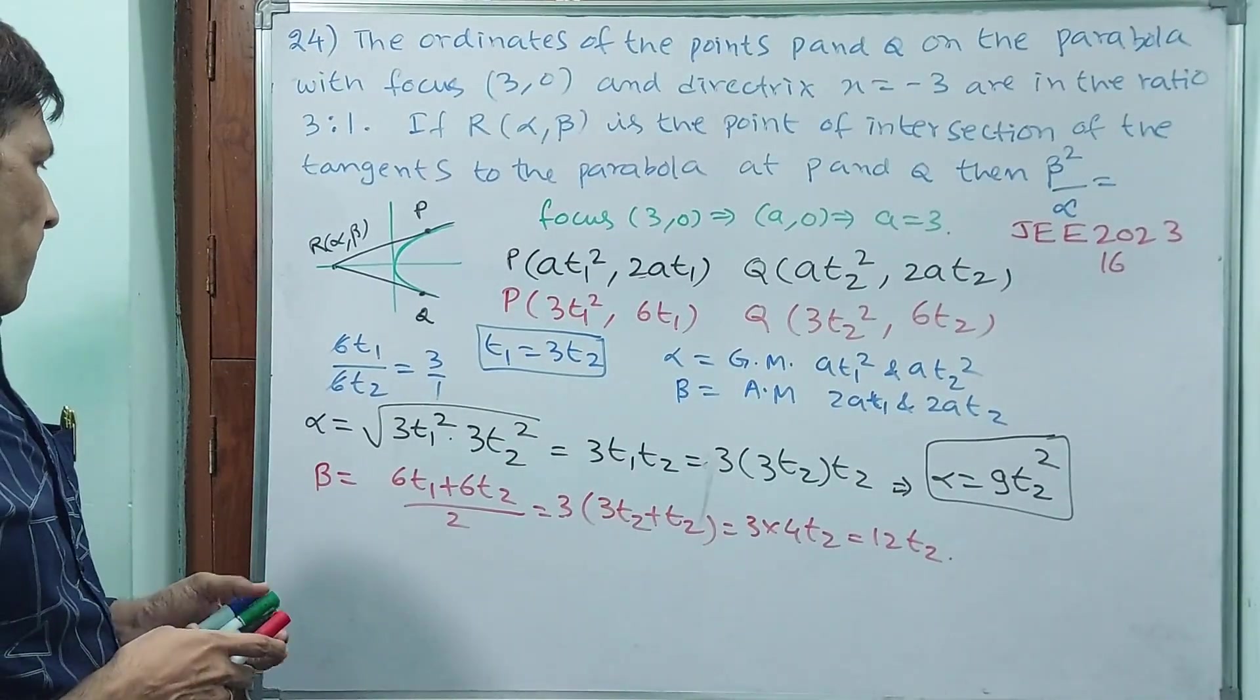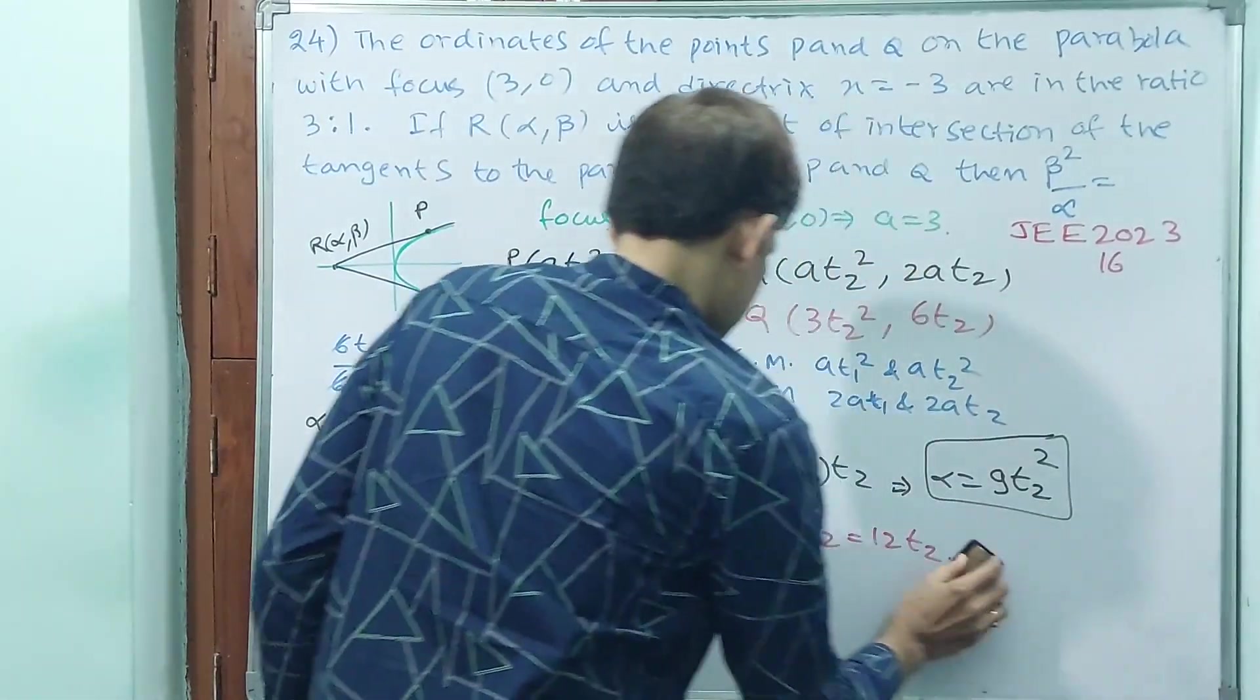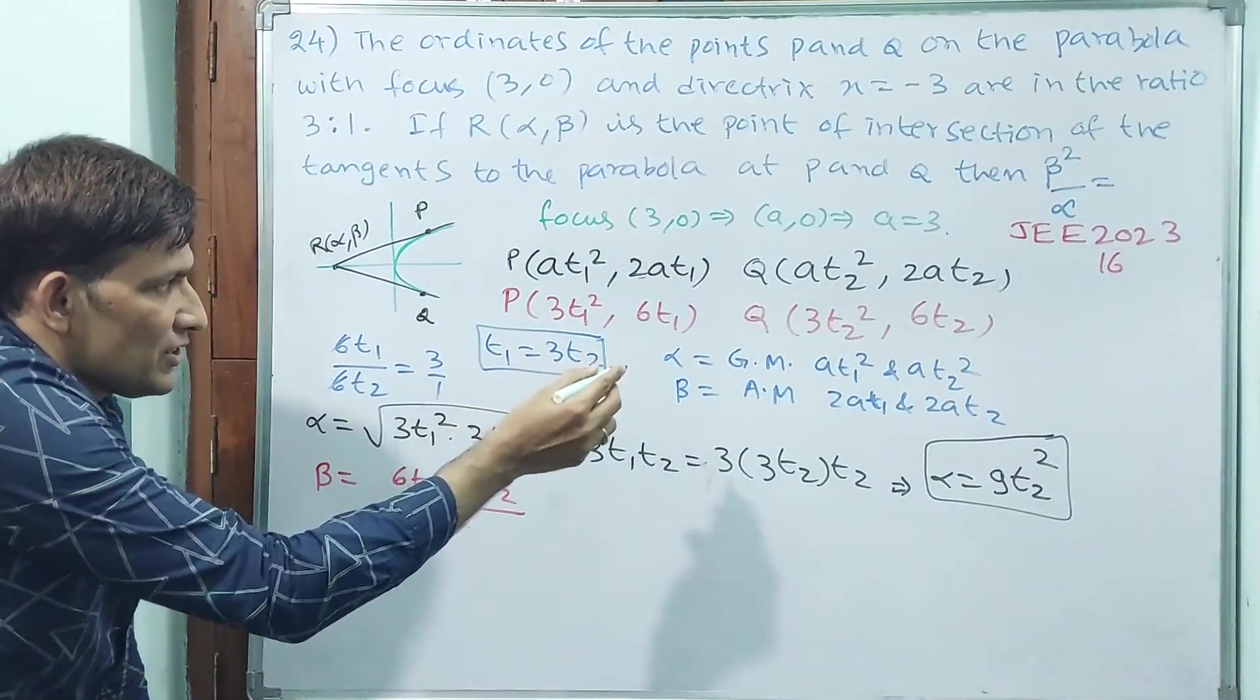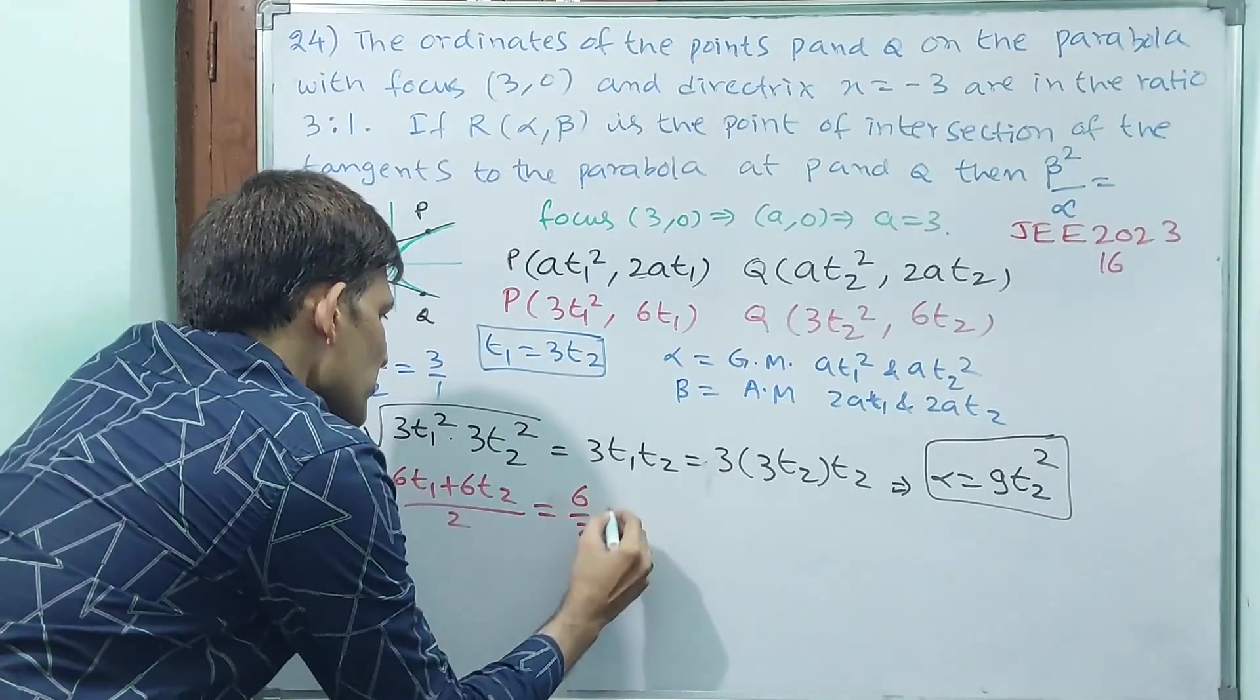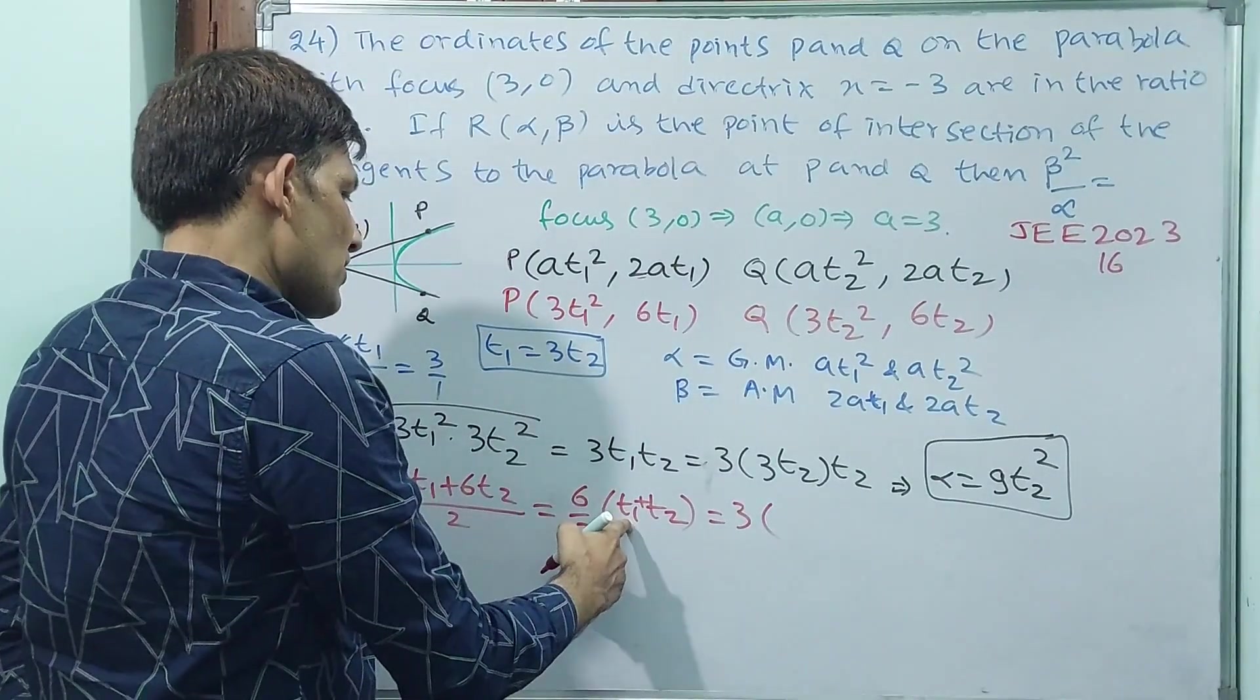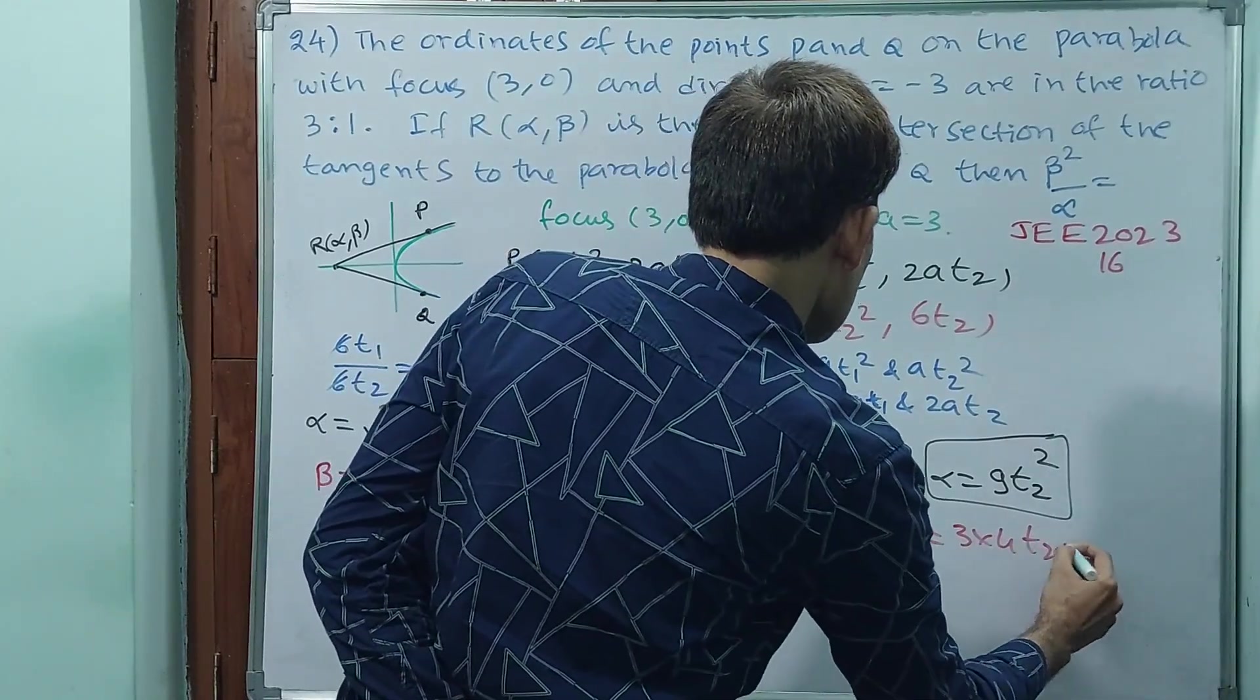Wait a minute. Have we done any wrong? If square comes to square, then only that 16 will arise. Where we have done this step? The arithmetic mean 6t₁ plus 6t₂ by 2 is okay. That is equal to 6 by 2, t₁ plus t₂, that is equal to 3(3t₂ + t₂), that is equal to 3 × 4t₂, that is equal to 12t₂. But t₂ square has to come. Because we are doing beta, but beta square is there. This is going to become t₂ square. No problem, carefully we are doing.